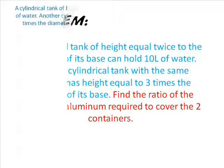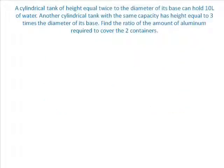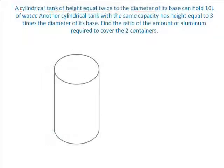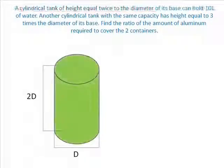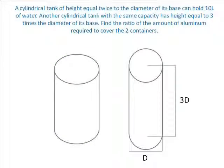For a problem like this, it is a good idea to go ahead and draw a picture of what we've been given. Here we have the cylindrical tank that has the height that is twice the diameter of its base. Let's denote that as the green cylinder. And cylindrical tank 2 that has height twice the diameter of its base. This will be the orange cylinder.